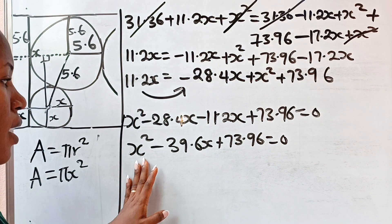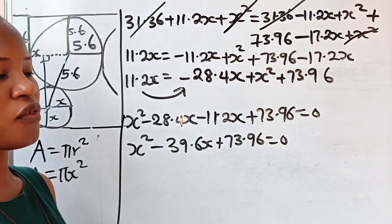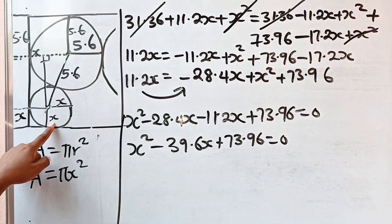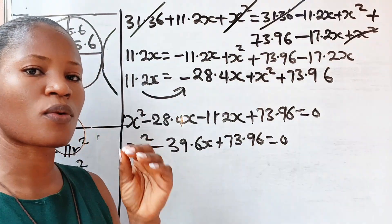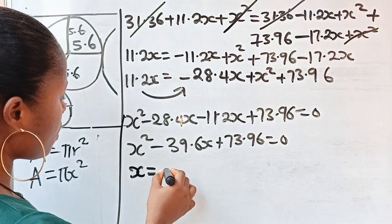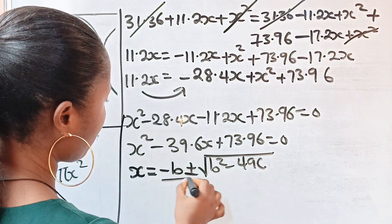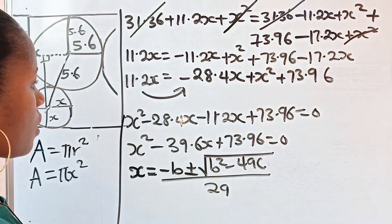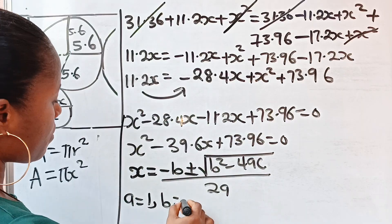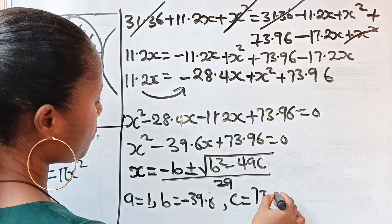Now let's solve for x using the quadratic formula. Using the quadratic formula, x equals (−b ± √(b² − 4ac)) / 2a. Our a is 1 (coefficient of x²), b is −39.6 (coefficient of x), and c is 73.96.